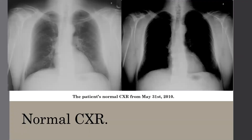Going back to the patient — this is his chest x-ray from 10 years ago, May 31, 2010, and it is normal. Two important things to note: the outline of the vertebral column is clearly visible, and behind the heart you can see only vasculature.